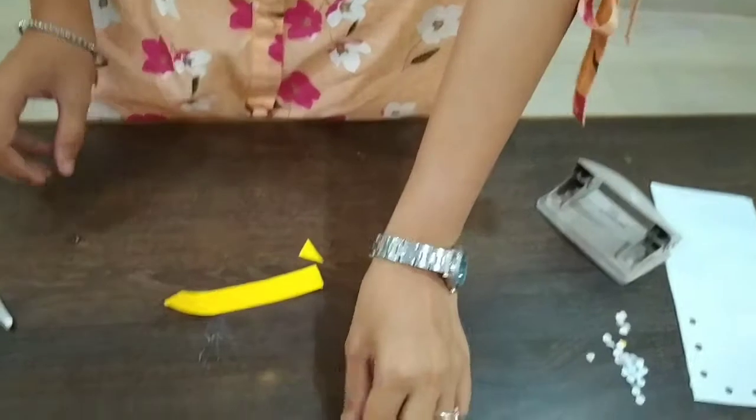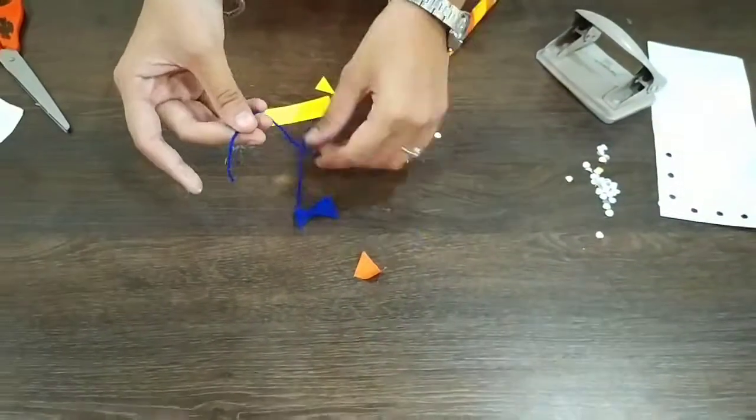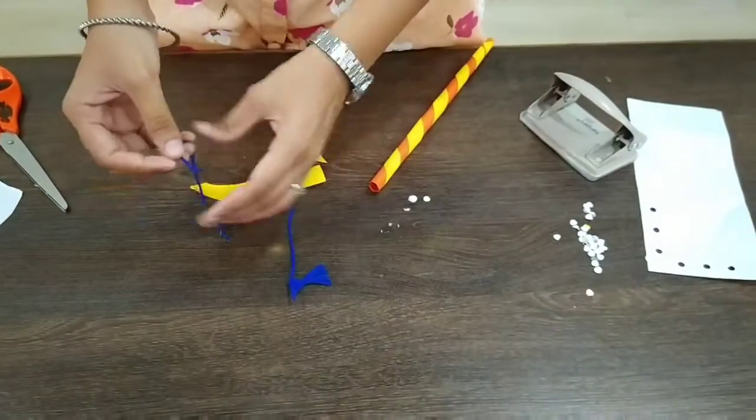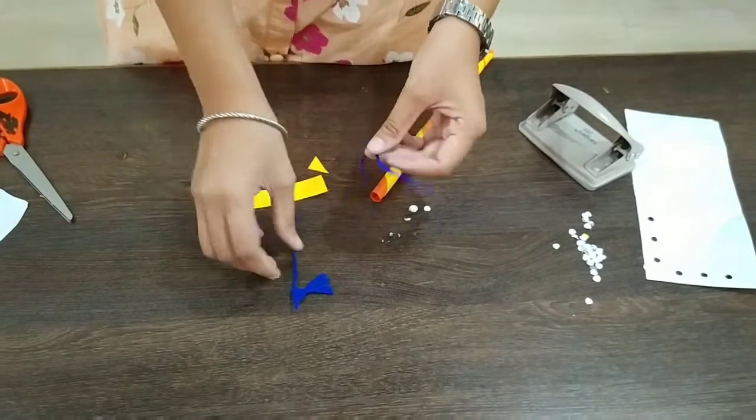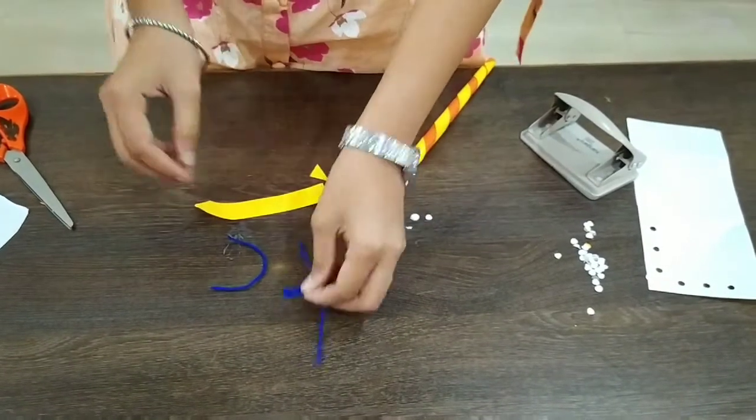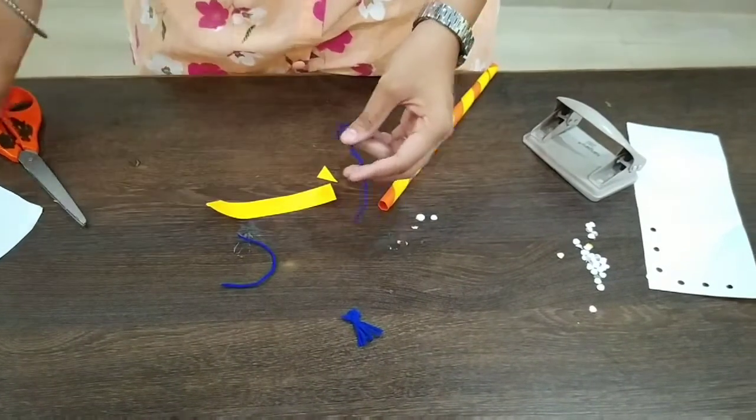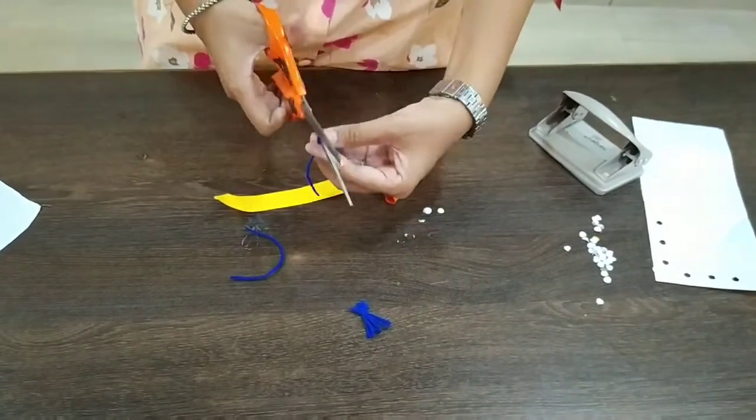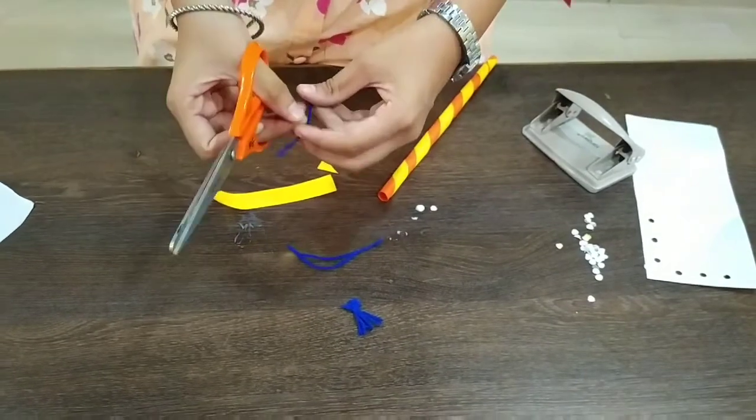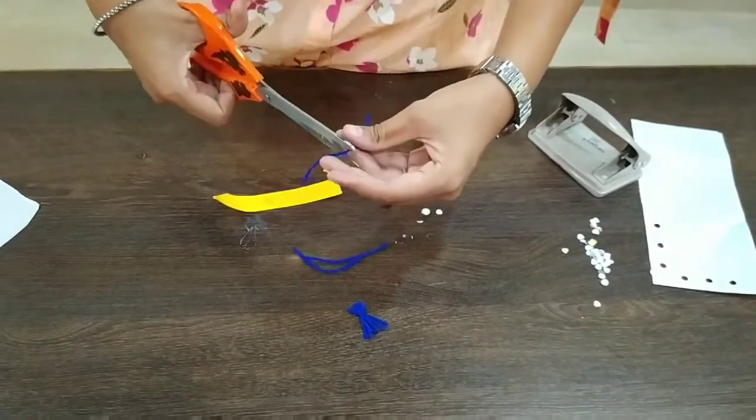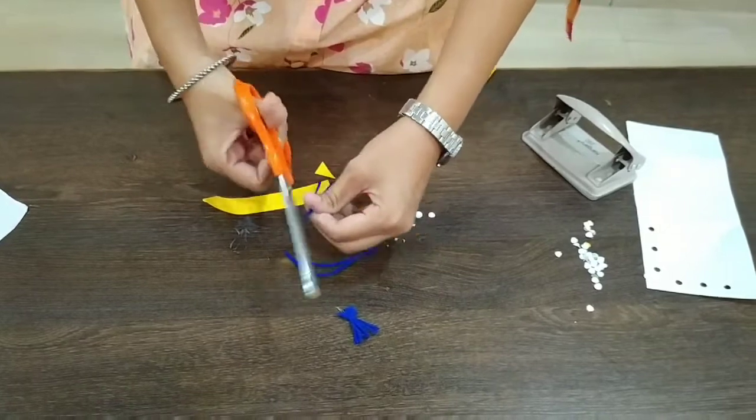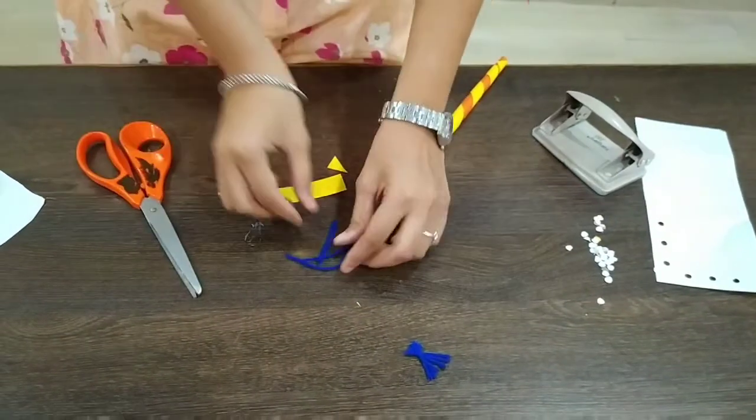Now we will take wool. We have provided you with some wool. What we are going to do is we are going to tie it this way. Yes, so while making this craft, please take your parents' help. Yes, see, I have cut this. You are also going to cut, and while cutting, please be careful.